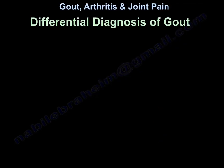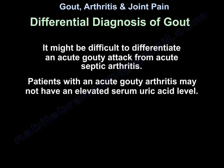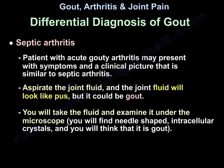Differential diagnosis: it may be difficult to differentiate an acute gouty attack from acute septic arthritis. Patients with acute gouty arthritis may not have elevated serum uric acid level, and may present with a clinical picture similar to septic arthritis. When you aspirate the joint, the fluid may look like pus — but it could be gout. Examining the fluid under the microscope may reveal needle-shaped intracellular crystals, suggesting gout.